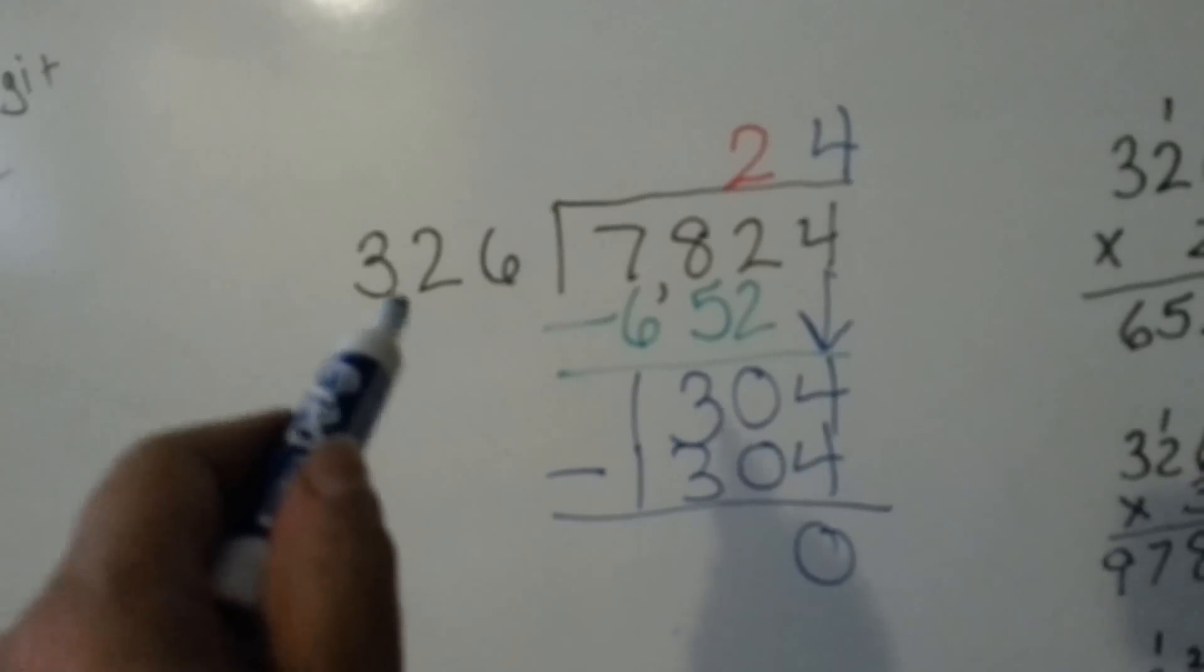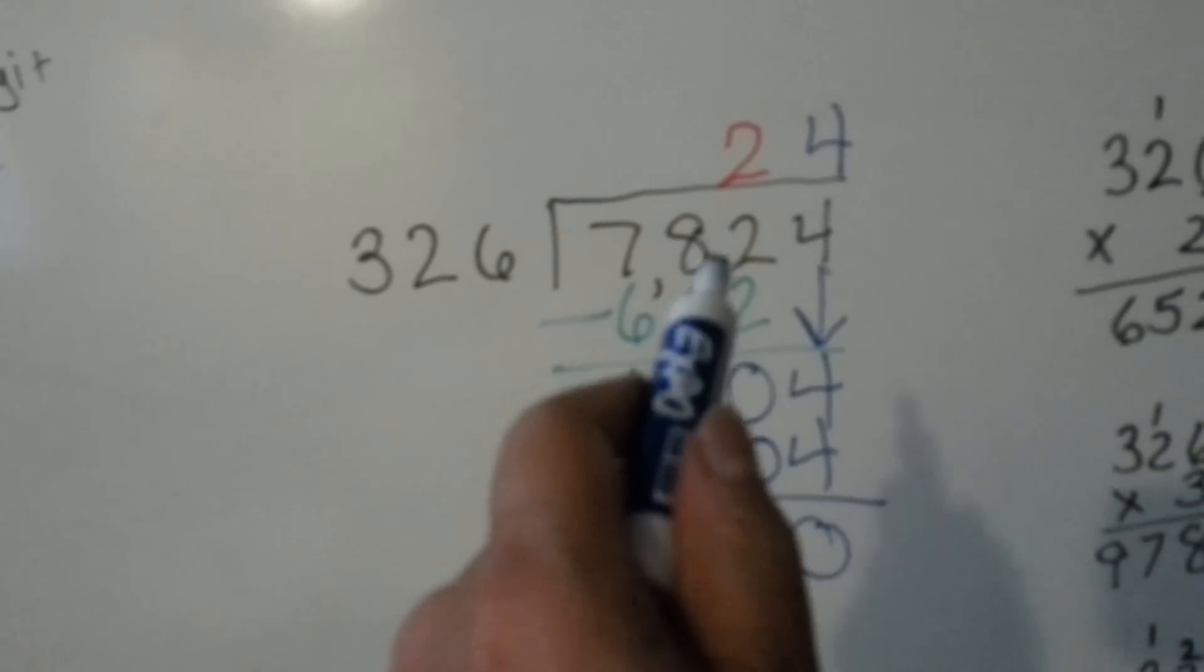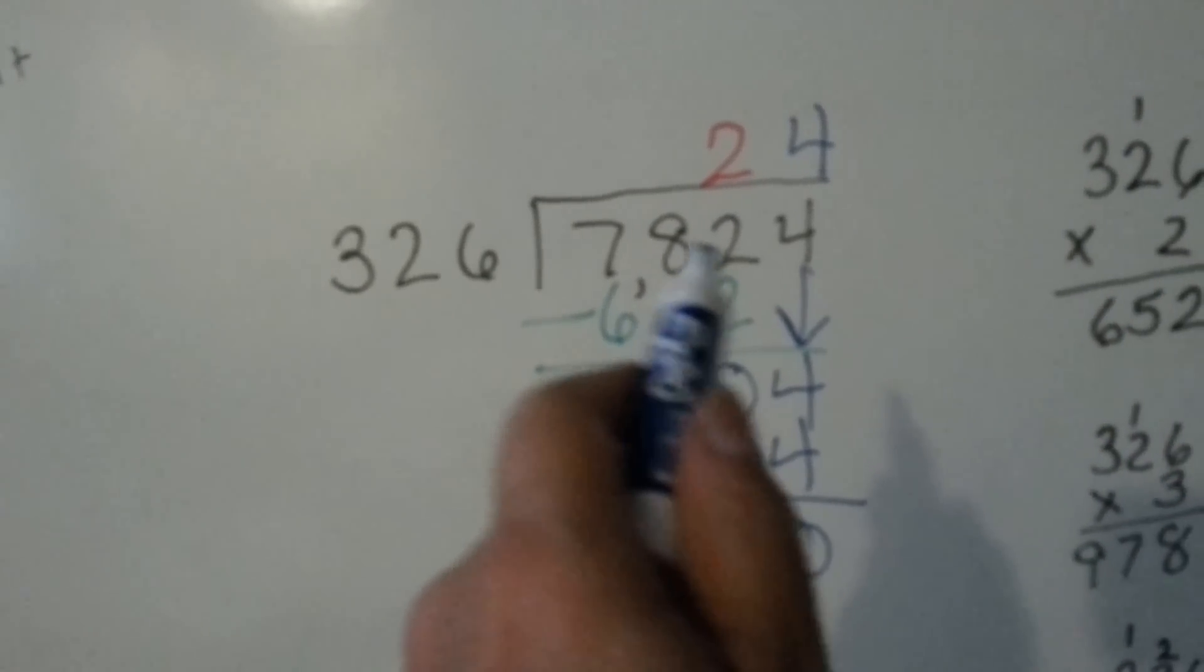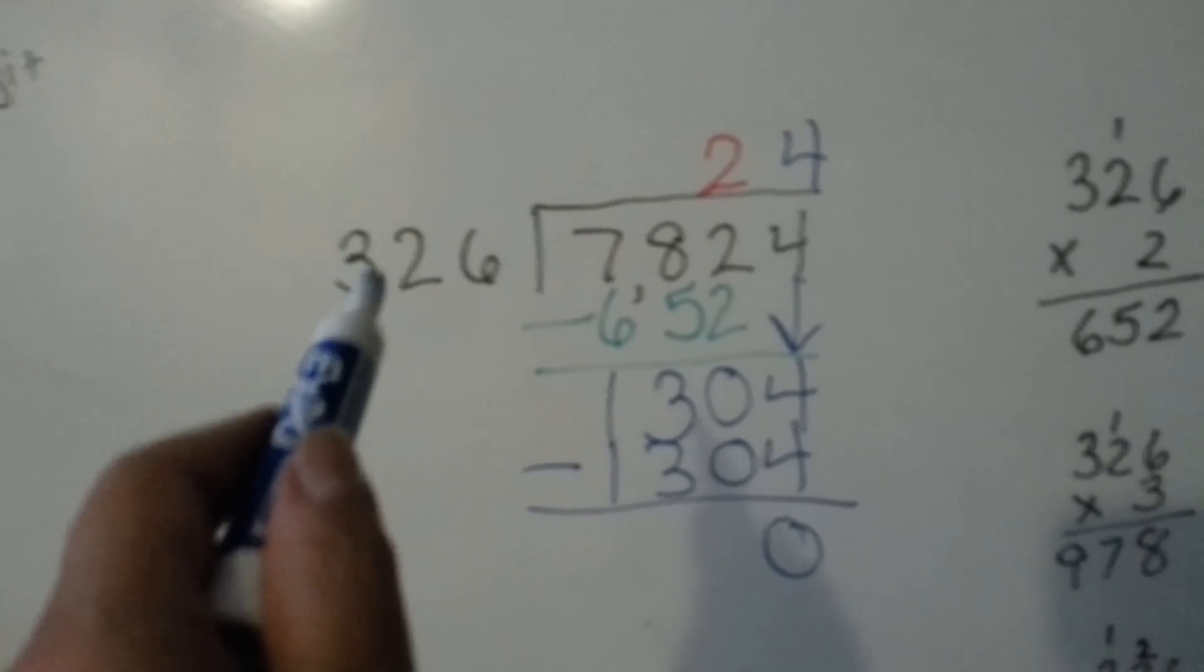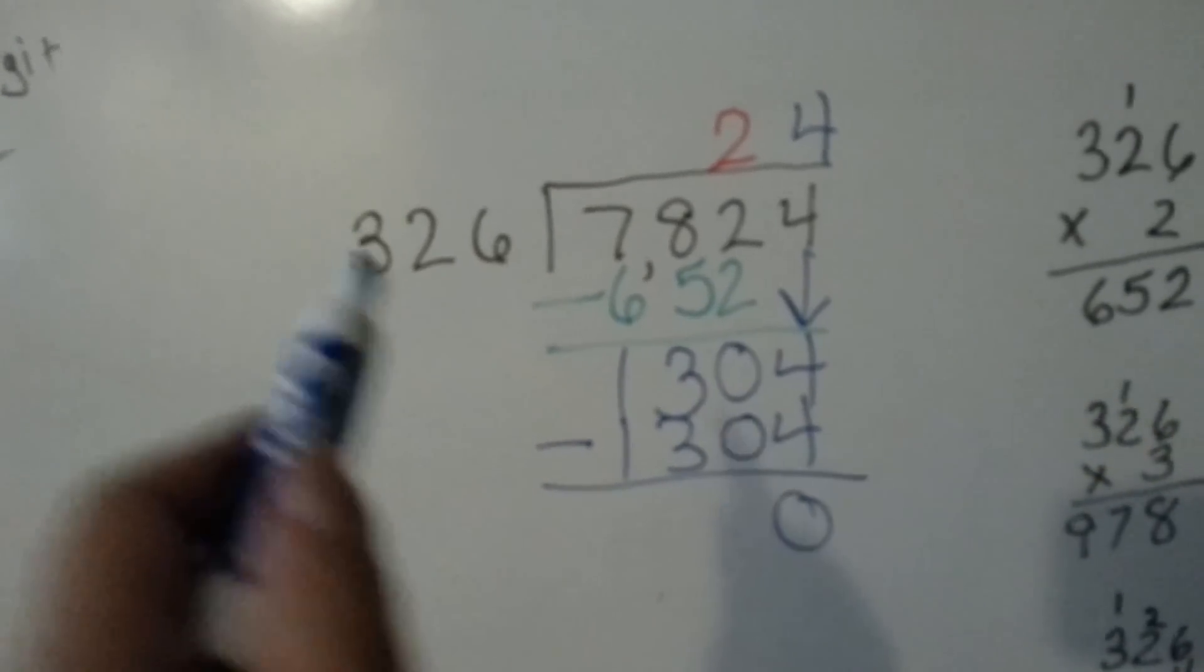You could do it with a 4 digit number, a 5 digit number, as long as it's smaller than this number. As long as the divisor is smaller than the dividend, you could keep doing it.